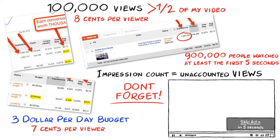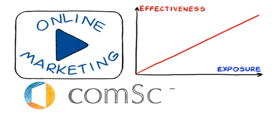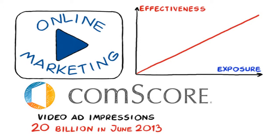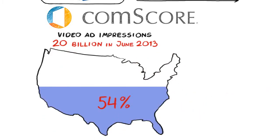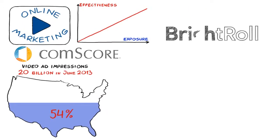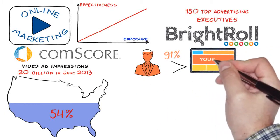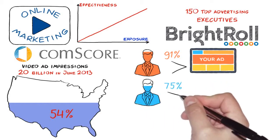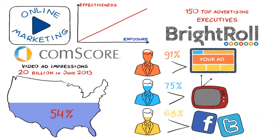I could show you hundreds of case studies like these, but I'm sure you get the point. Online video marketing is effective when it comes to exposure. According to a ComScore report, video ad impressions surpassed 20 billion in June 2013. Video ads reached nearly 54% of the total U.S. population an average of 121 times during the month. In a BrightRoll study surveying 150 top advertising executives, 91% believe online video is equally or more effective than display advertising, 75% believe it is more effective than television, and 68% believe it is more effective than social media. In short, online video advertising is growing many times faster than TV, search, and most other digital markets. And if you don't have this secret traffic source in your arsenal, then you are simply being left behind.